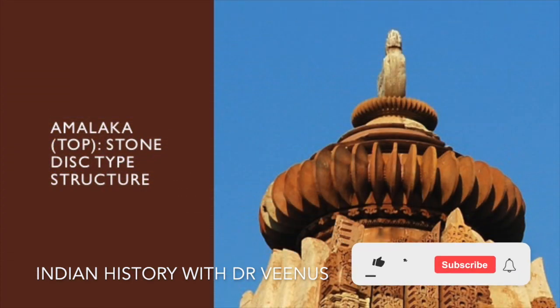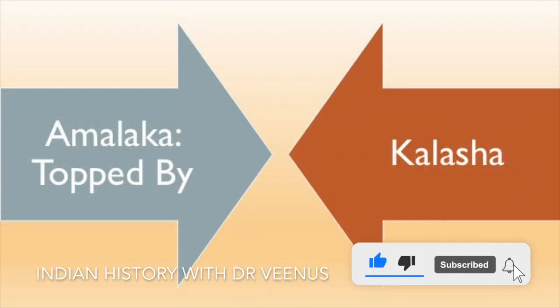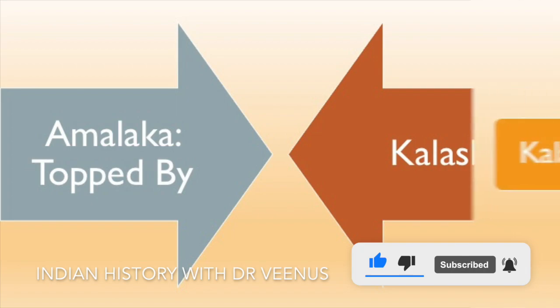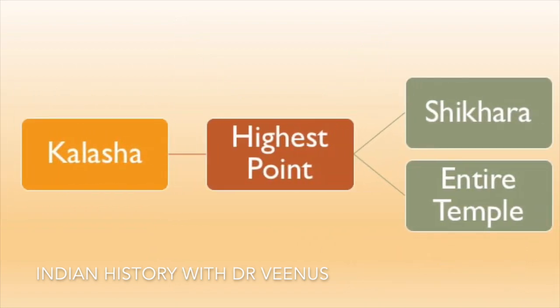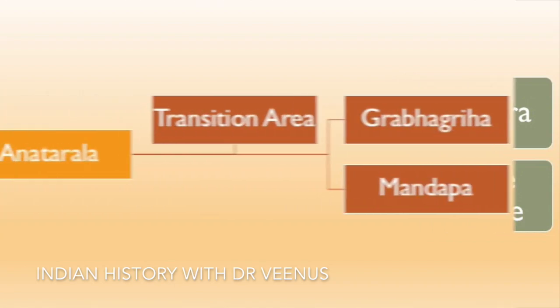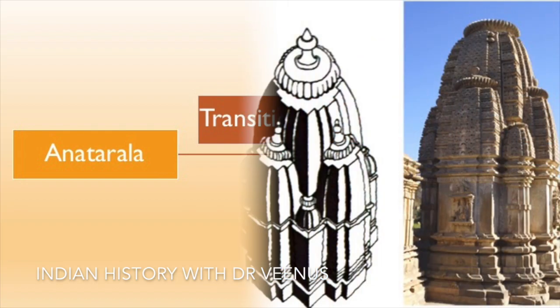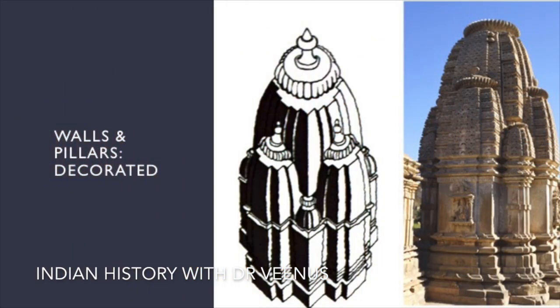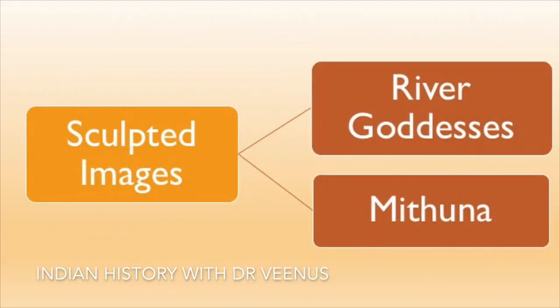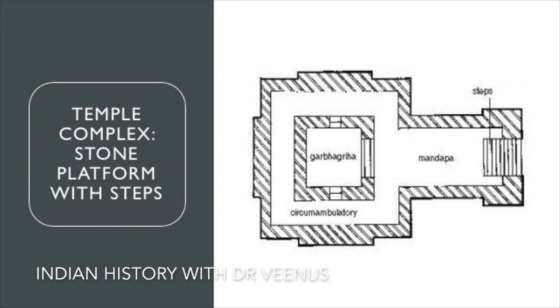There is a stone disc type structure called an Amalak at the top of the temple. The Amalak is topped by a Kalash, which is the highest point of the Shikhar as well as the entire temple. There is also an Antaraal, which is the transition area between the Garbhagriha and the Mandap. The walls and pillars of the temple are decorated with sculpted images of river goddesses and Mithun images. The entire temple complex is built on a stone platform with steps leading to it.